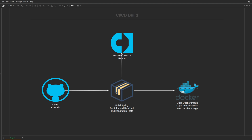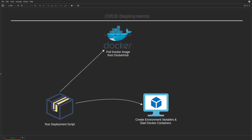We are going to look at the build and deployment process, starting from where the code is checked in and then the build is triggered. Once the build is triggered, it runs its unit and integration testing, and the code coverage report is pushed to Codecov. Then a Docker image is created and pushed to Docker Hub. For deployments, the deployment script is run, which first pulls the Docker image from Docker Hub, then creates the environment variables and starts the Docker containers. So without any further ado, let's get started.